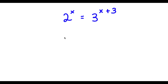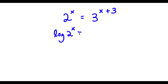So in this problem, I have 2 to the power of x is equal to 3 to the power of x plus 3. To solve this, I'm going to first take log on both sides. So I have log 2 to the power of x is equal to log 3 to the power of x plus 3.